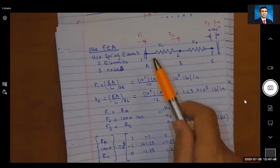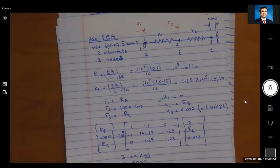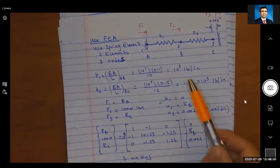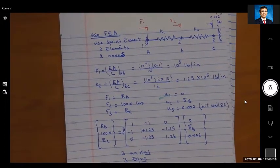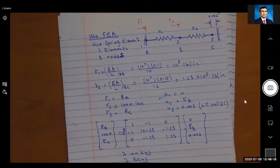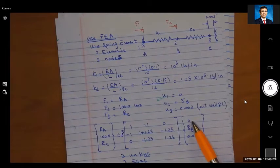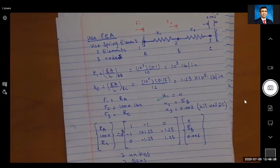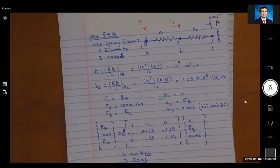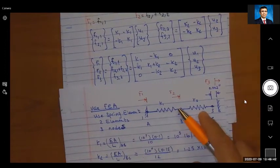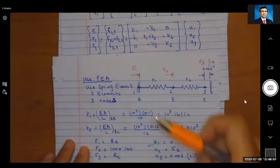Now I really have three nodes and two elements, very similar to what we had here. So I can use the global stiffness equation that we just derived. If this was a new problem, I would have to write element stiffness equations, element stiffness matrix, and then put it together. So now I'm going to say f1 is the reaction Ra, f2 is the force applied at 2, 1000 pounds, f3 is the reaction at C. Now we want to solve for the unknowns.